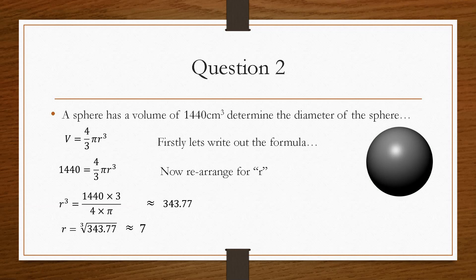So the question asks for the diameter. So the diameter is always 2 times the radius. So in this case, the diameter would be 14 centimetres. And that's how you would go about solving that problem there. That's a working backwards question.